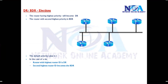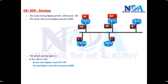In our example topology, assume these are the priority values we have configured. In this example, 200 is the highest, so router D will become the DR, and the next highest is 100, so that will become the BDR. Comparing with other values like 10, 1, 1 — the default election is done based on the priority value.